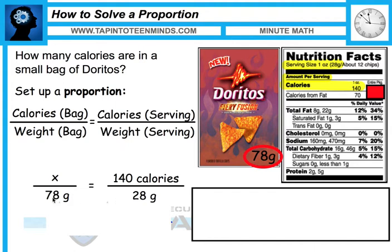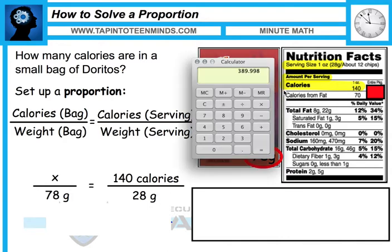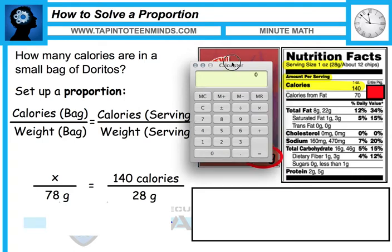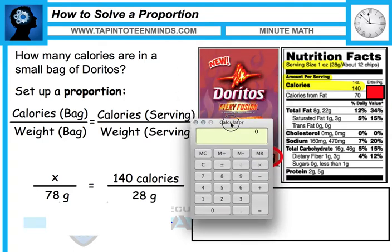We know that this bag of chips is a certain number of times bigger than the serving size. So what we'll do with a calculator is pull that up here, and we're going to see how many times bigger that bag of chips is.